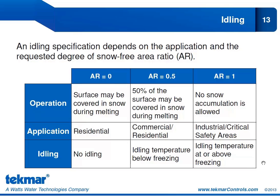There are three levels of the snow-free area ratio: AR0, AR0.5, and AR1. For those familiar with the former class system, this has replaced the level 1, 2, and 3 or class 1, 2, 3 designations. AR equals 0 means the entire surface may be covered in snow during melting — the snow will gradually melt after snowfall ends. This applies to residential applications, where we are not doing any idling because idling is expensive. For residential use, most people want to keep costs as low as possible and do not need zero snow accumulation, so idling would be turned off.